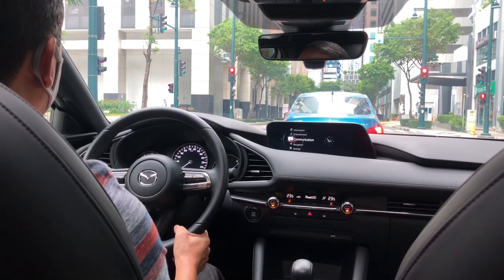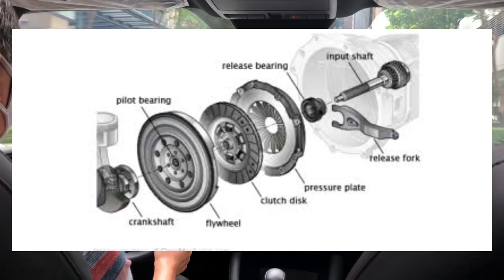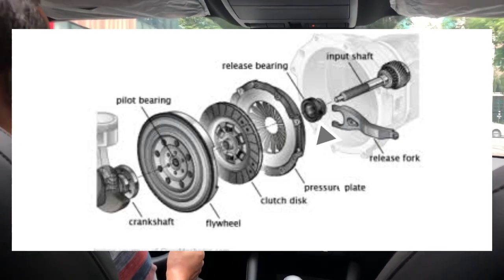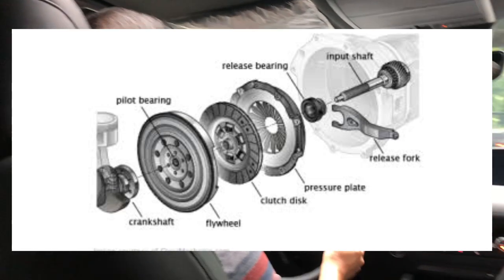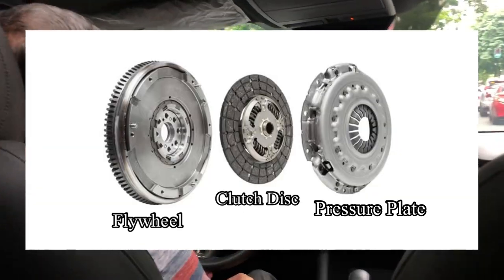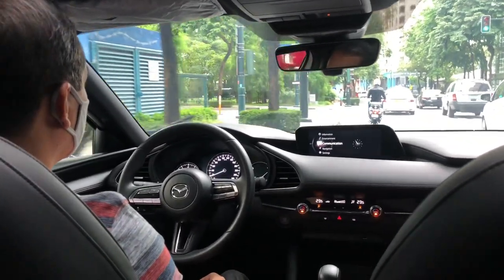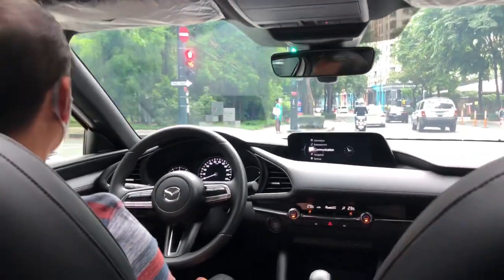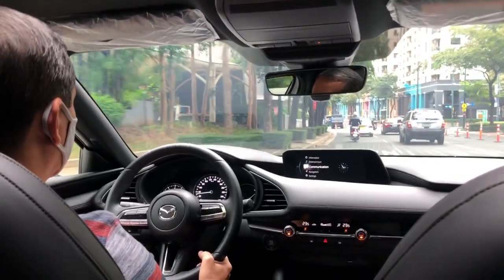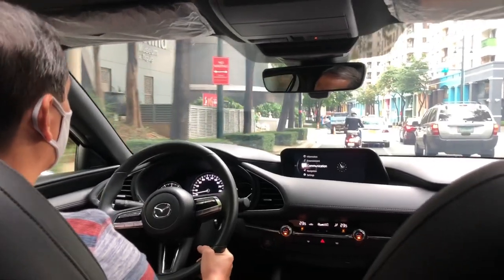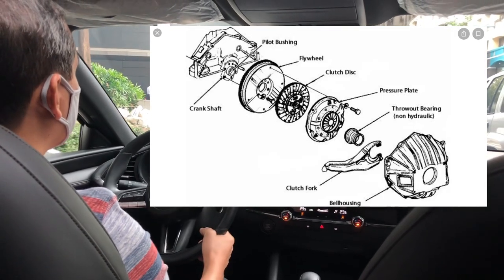The clutch system is composed of a clutch disc, a pressure plate, and a release bearing. The clutch disc has two sides that make contact with the flywheel and the pressure plate — it sits in between them. When your foot is not on the clutch pedal, the clutch disc and the flywheel are connected together, pushed by the pressure plate.